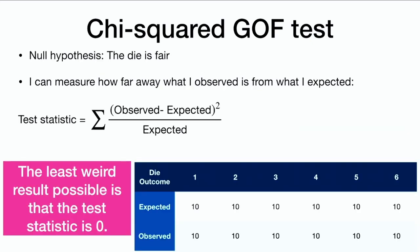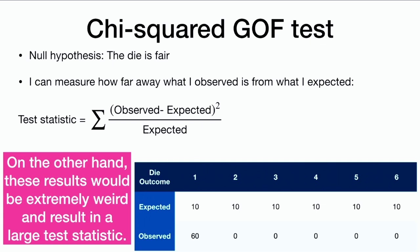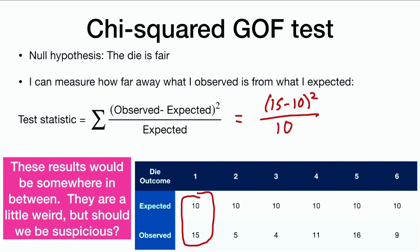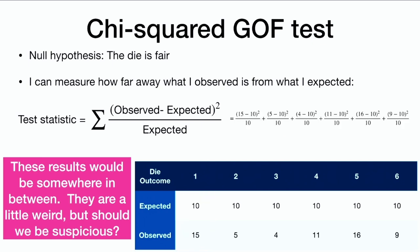The least weird result possible is a test statistic of 0, which only happens if what we observed and what we expected are exactly the same. On the other hand, extremely weird results — like seeing all 1s — would make observed and expected very far apart. The results we saw are somewhere in between: a little weird, but we need to calculate the chi-squared test statistic to decide. The first part is (15 minus 10) squared over 10, and we do that for all six categories.